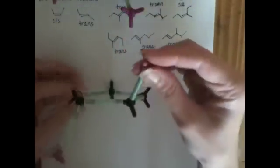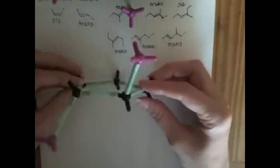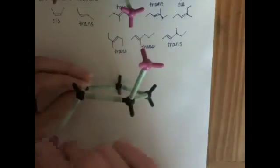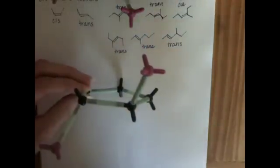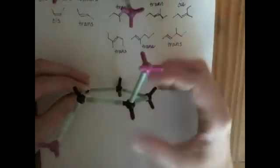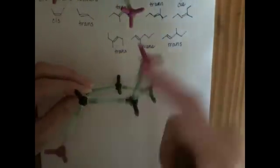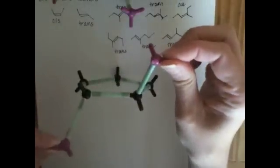Here's a cyclopentane, again, with two halogens on it. But if we look down the plane of the ring, you can see that one of the halogens is pointing on one side of the ring. The other halogen is pointing on the other side of the ring. So this is a trans isomer because the two substituents are on different sides of the ring.